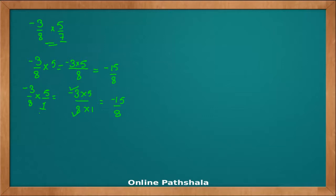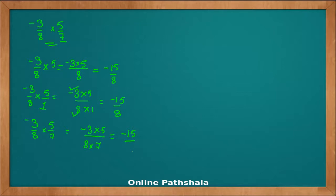So here, minus 3 by 8, if I have to multiply by 5 by 7, what I really get is minus 3 into 5 — I am multiplying the numerators — and the denominator is the multiplication result of the denominators.